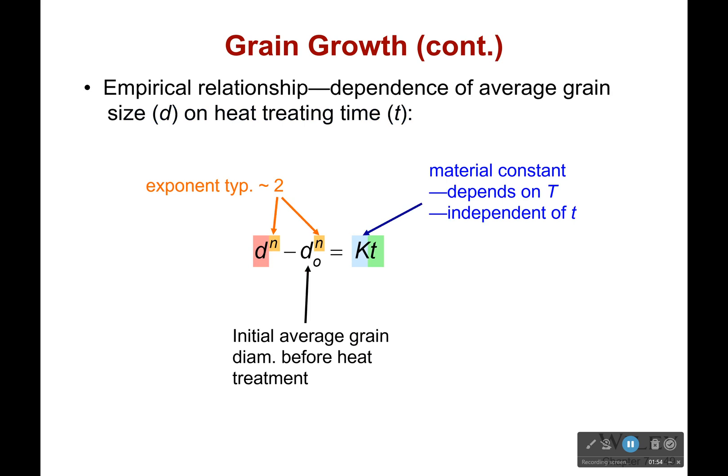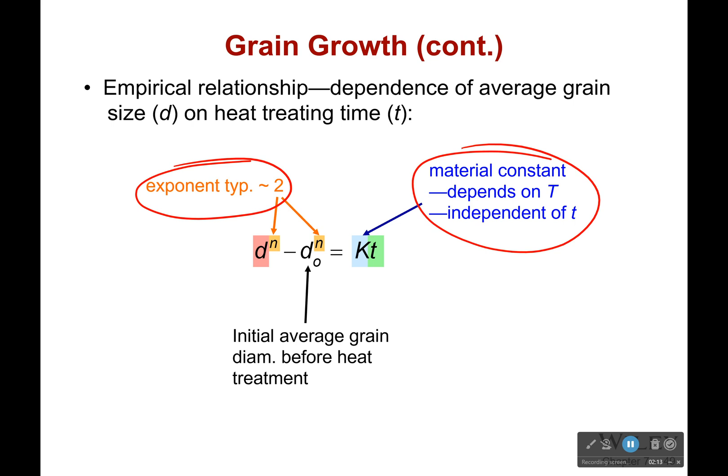There is an empirical relationship between the average grain size and the heat treatment time. The exponent is normally two, but it is something you have to find from the particular case you're looking at — the particular metal, the particular purity. It's also a material constant which depends on temperature but is independent of time. So the constant will change with temperature. This gives us the initial average grain diameter before heat treatment, and that will change based on this constant and the amount of time at that temperature, showing us how much bigger the grains have gotten over time.